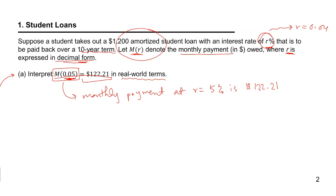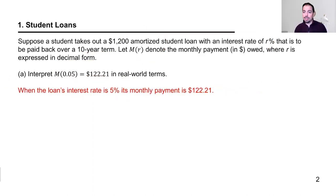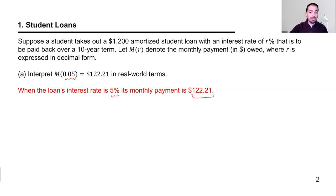Throughout this presentation, you'll see me writing in red on the slides. On the next slide, I've duplicated these and put in the typed version of all the solutions, so we can read through them together. Here's the more polished version of this interpretation: when the loan's interest rate is 5%, the monthly payment is $123.21.